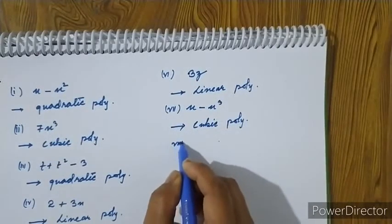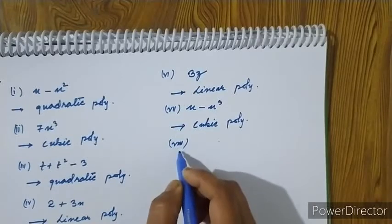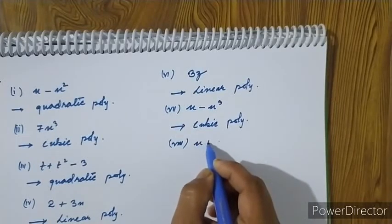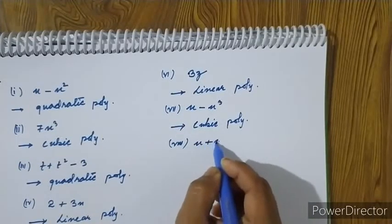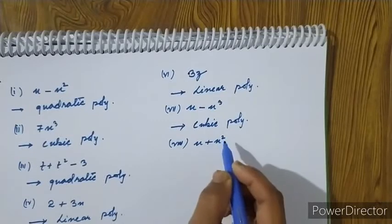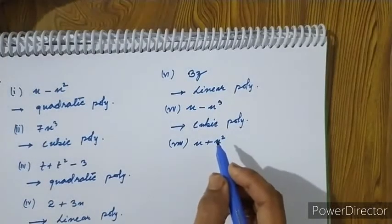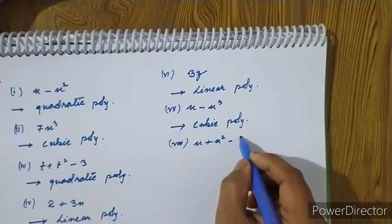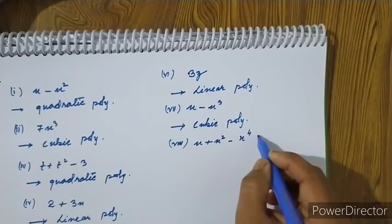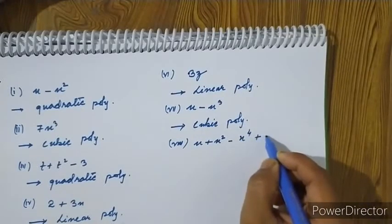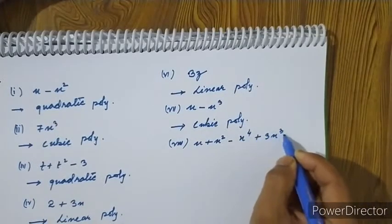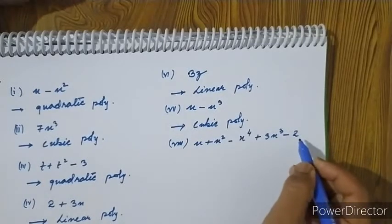Roman numeral 8: x plus x squared minus x to the power of 4 plus 3x cubed. The highest degree term is x to the power 4.